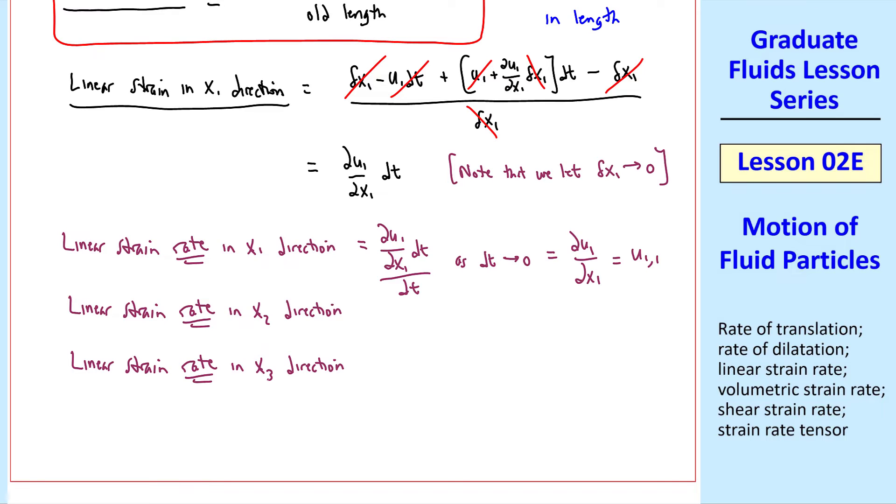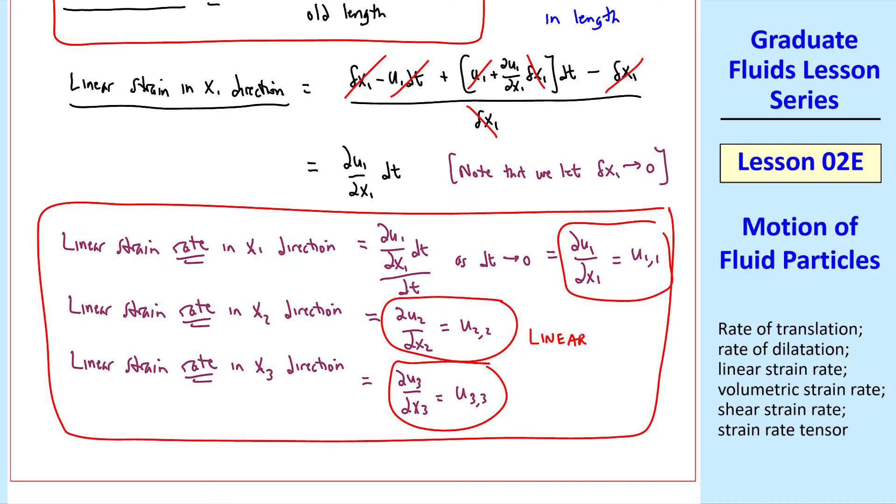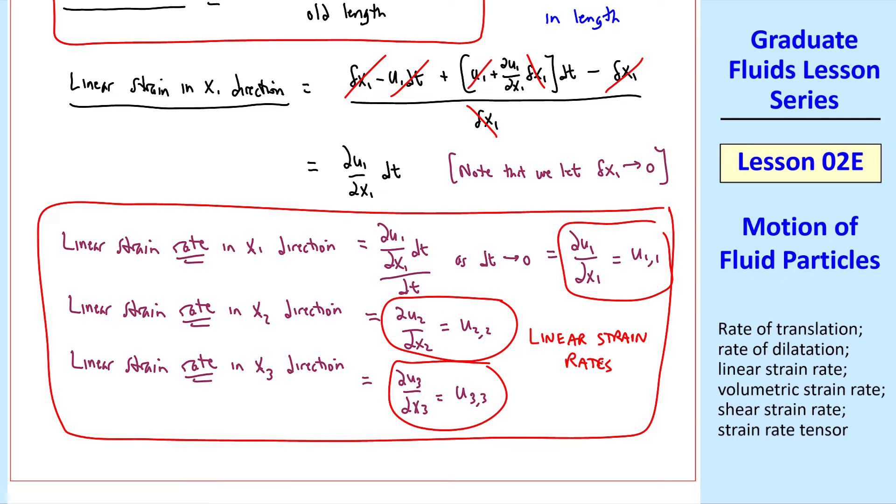Similarly, the linear strain rate in the x2 direction turns out to be del u2 del x2, or u2 comma 2. And similarly, in the x3 direction. So these are our linear strain rates.